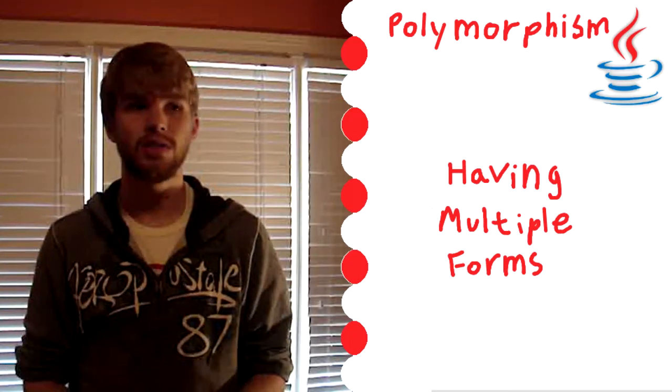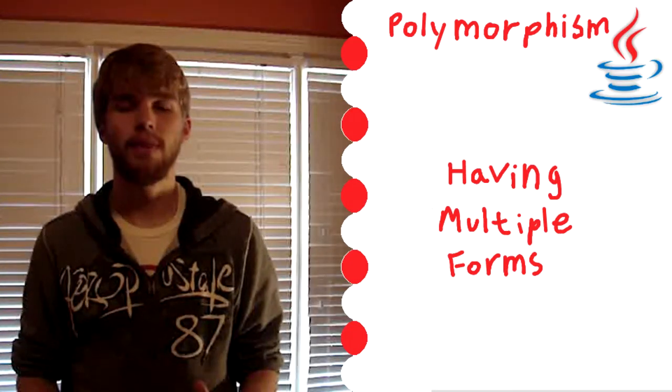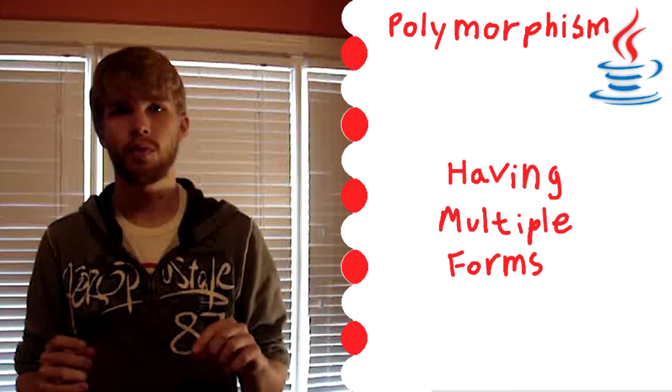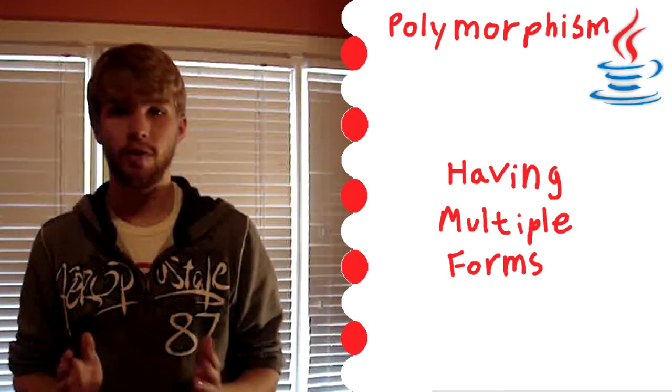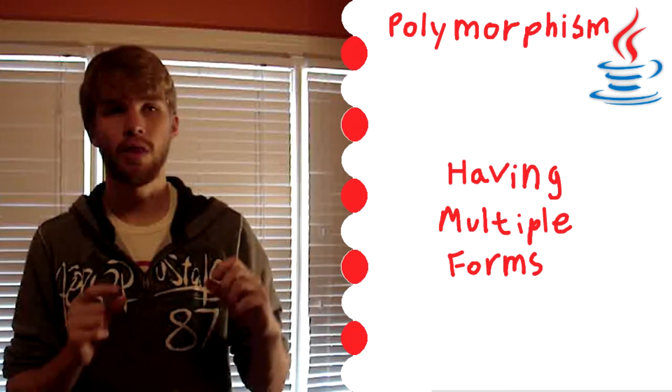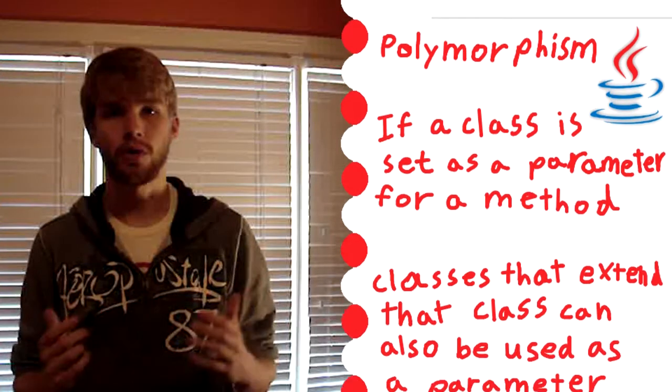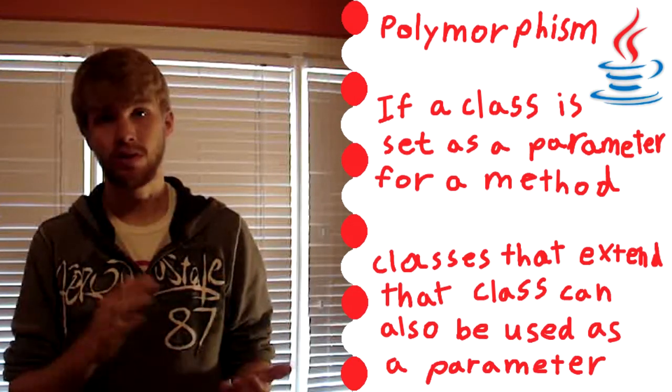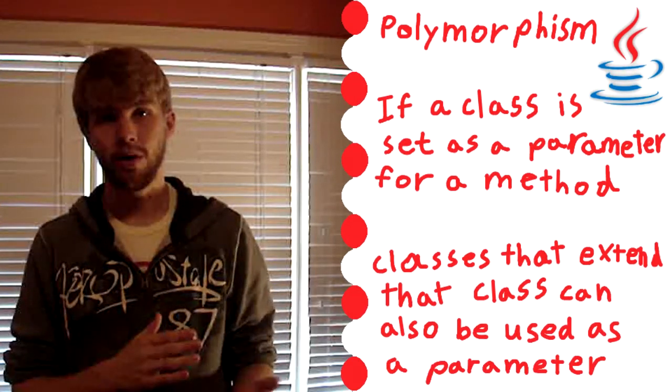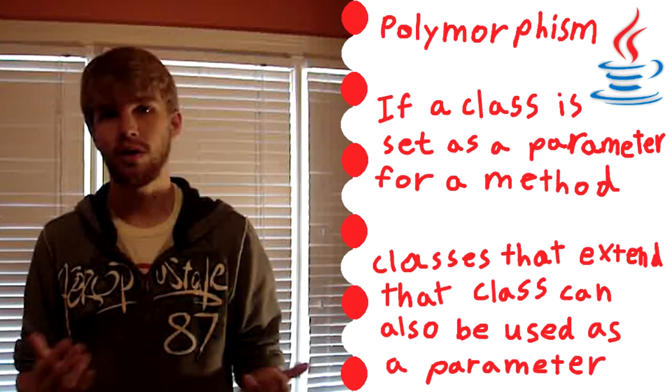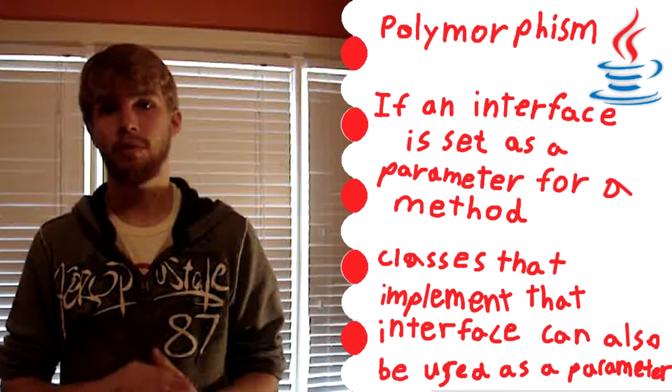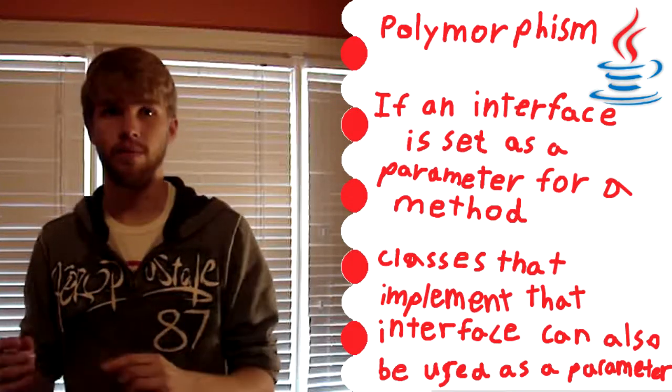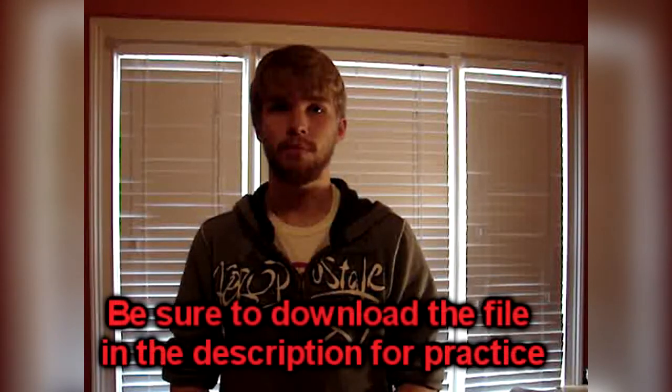let's say you have a method that's called shed skin. You have a method that has one of the parameters, it requires a reptile to be passed as one of the parameters. And the idea of polymorphism is, it doesn't have to be a reptile class per se for it to work. If it extends the reptile class, or if you have a reptile interface and it implements the reptile interface, it'll work as well. So if you have the snake, you can pass the snake in as the reptile in the parameter, and it'll work. That's what polymorphism means. It's pretty straightforward if you think about it.